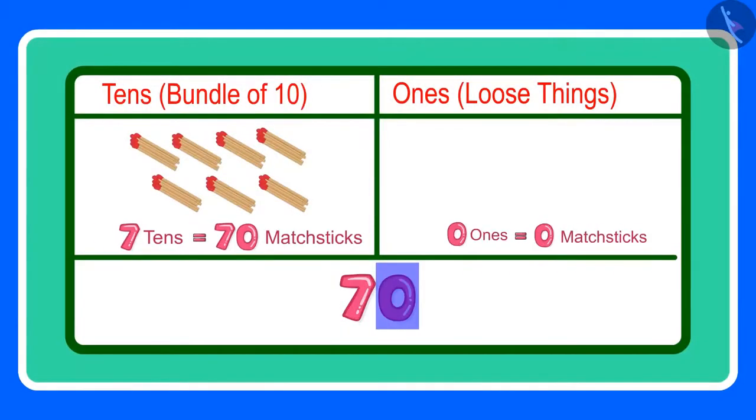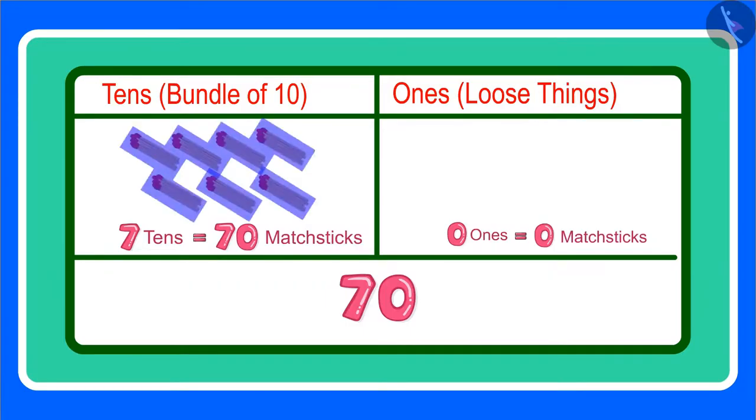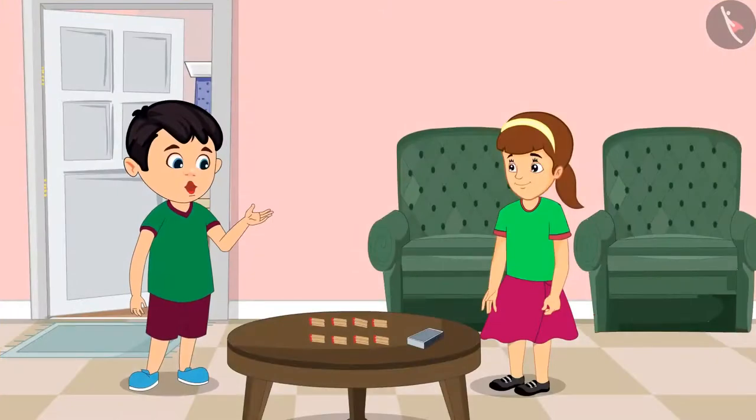Zero ones? What does zero ones mean? Zero ones means there is not even a single loose matchstick. For 70 matchsticks, you will need to make seven bundles of 10 matchsticks each. Okay, now I have understood. Thank you, Arti. So children, that is all for today.